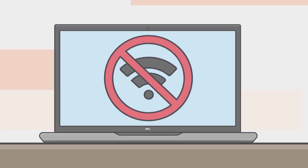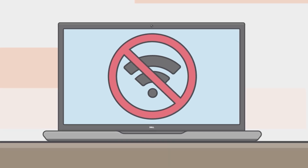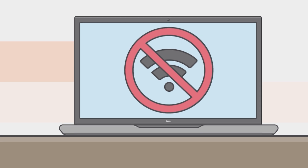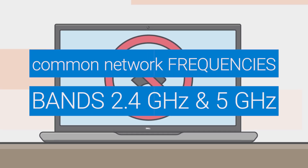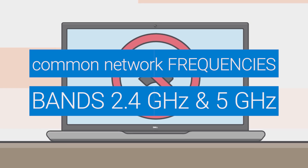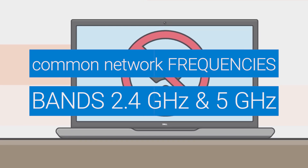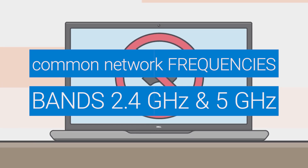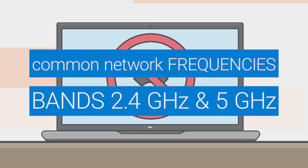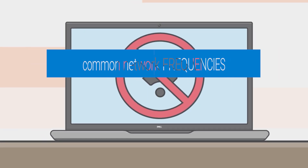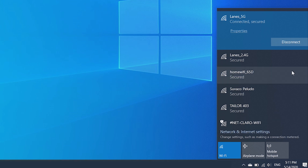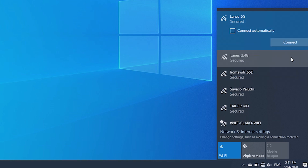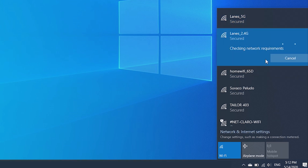If that didn't work, try using a different frequency for your network connection. Typically, consumer Wi-Fi routers broadcast at two different frequencies: 2.4 GHz and 5 GHz. These bands should appear as separate networks in the list of available Wi-Fi networks. If your list includes both networks, try connecting to the other network and see if this works.